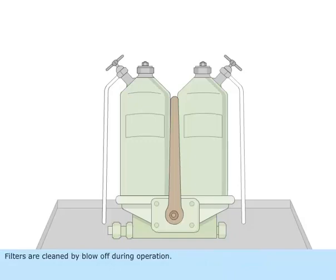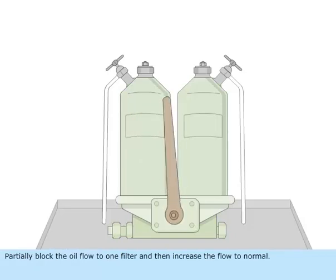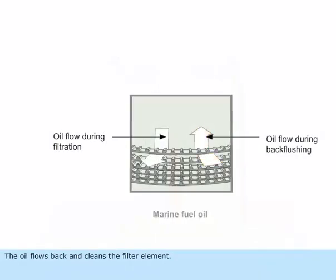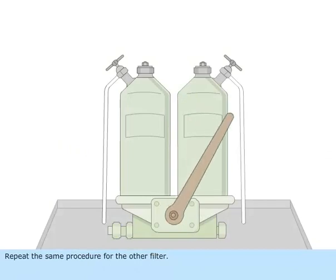Filters are cleaned by blow-off during operation. Blow off one filter at a time. Partially block the oil flow to one filter and then increase the flow to normal. The oil flows back and cleans the filter element. Repeat the same procedure for the other filter.